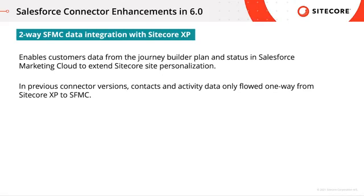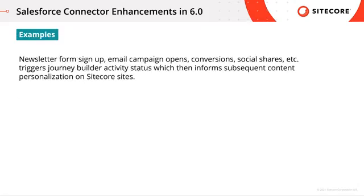This enables customer data from the journey builder plan and status in Salesforce Marketing Cloud to extend Sitecore site personalization. A couple of examples can be when our customer signs up on our newsletter form on our website, opens the email campaign that is sent, conversions on our e-commerce websites, or social shares — features which subsequently trigger the journey builder activity status, which then informs content personalization on Sitecore sites.